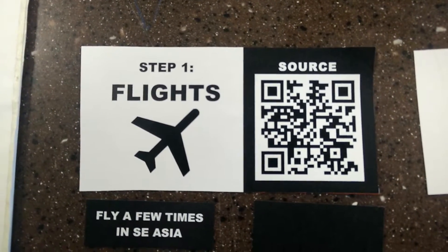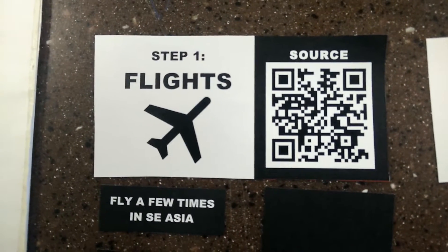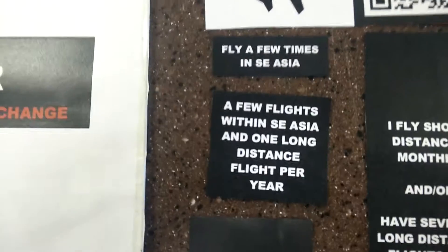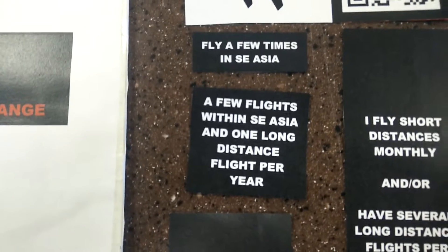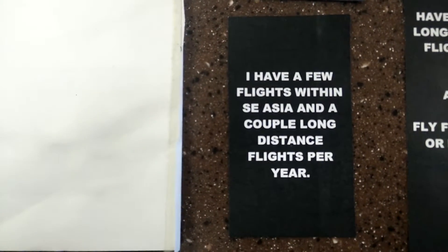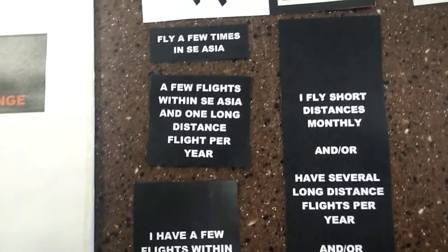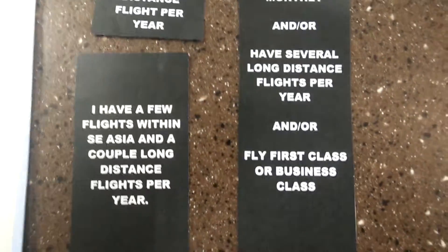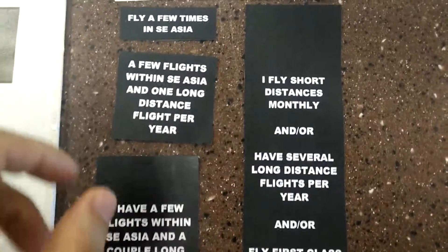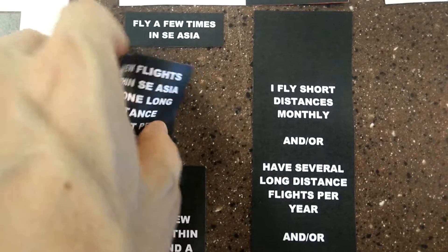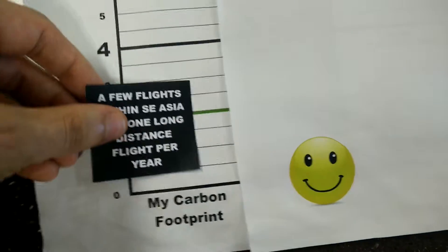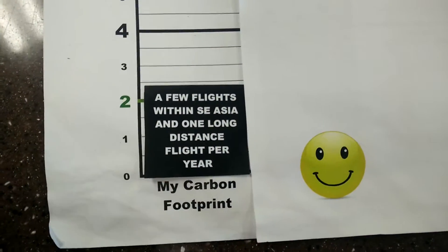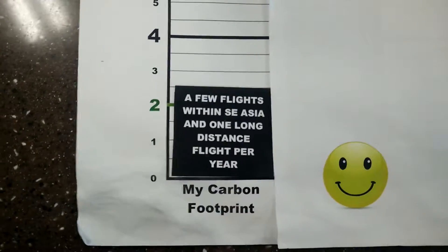First they would look at their flights. If they want to see the source of where this information came from, they can use a QR scanner. So they would decide: do they fly a few times in Asia, a few flights within Southeast Asia and one long distance, or a few flights within Southeast Asia and a couple of long-distance flights per year? Based on what they think they do, they take that card and place it onto the graph, so they can start to see a quantification.